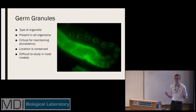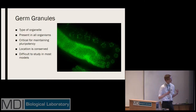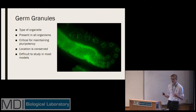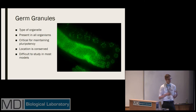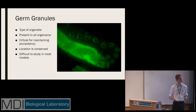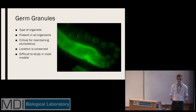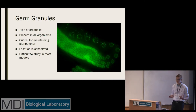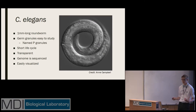First, you need to know about germ granules. Germ granules are a specific type of organelle found in germ cells — the cells that form gametes. What's interesting about these germ granules is they're found in all sexually reproducing organisms. You can see them around the nuclei of germ cells in C. elegans, right over here.